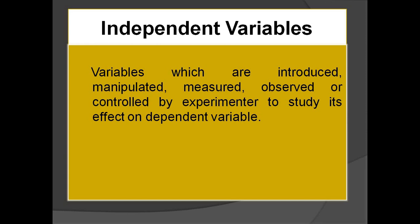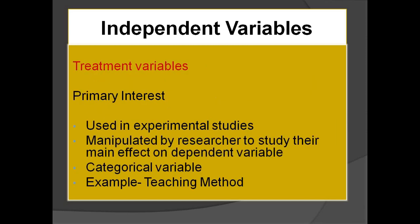Next is the independent variable — variables which are introduced, manipulated, measured, observed, or controlled by the experimenter to study their effect on dependent variables. We have four types of independent variables. The first is treatment variables. Treatment variables are of primary interest — the researcher's main focus is on treatment variables. They are used in experimental studies; the researcher manipulates these variables to study the main effect on dependent variables. These are mostly categorical — for example, teaching method.